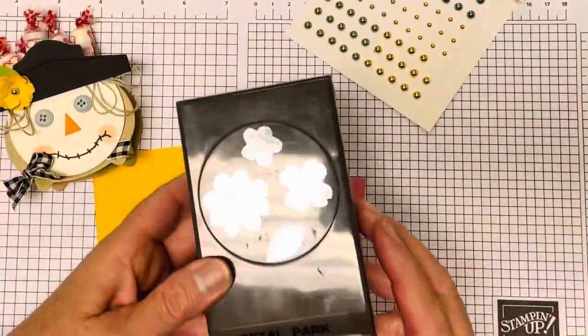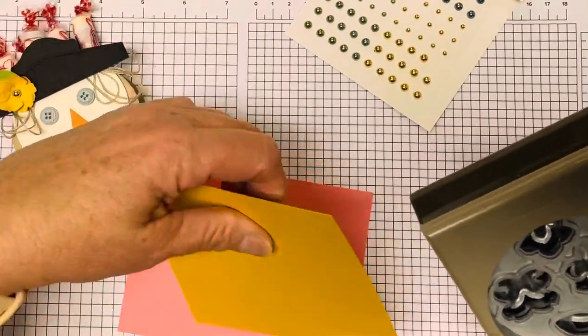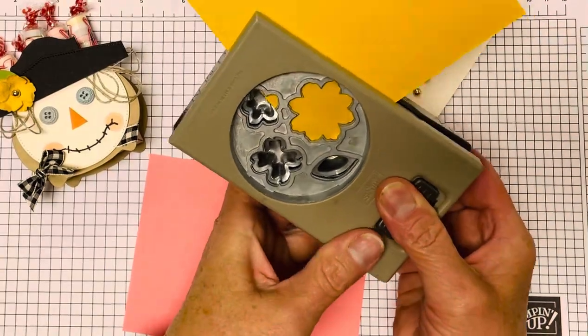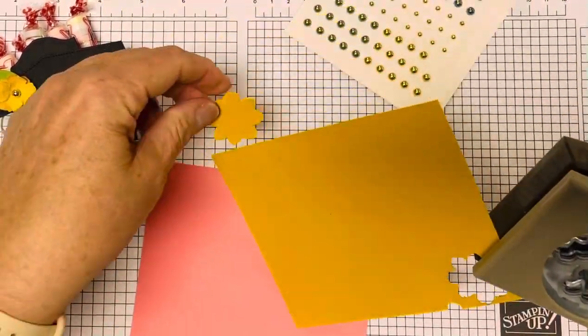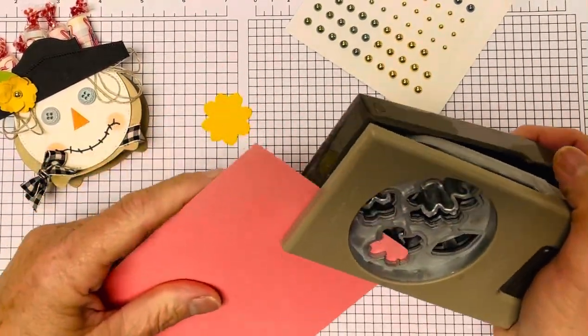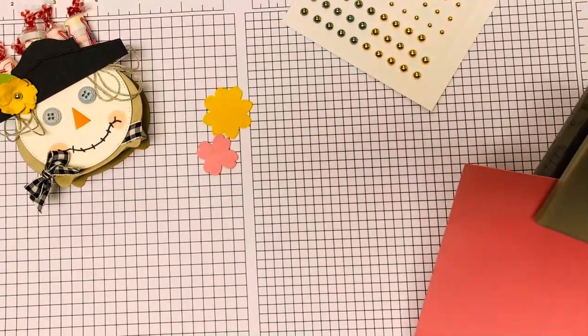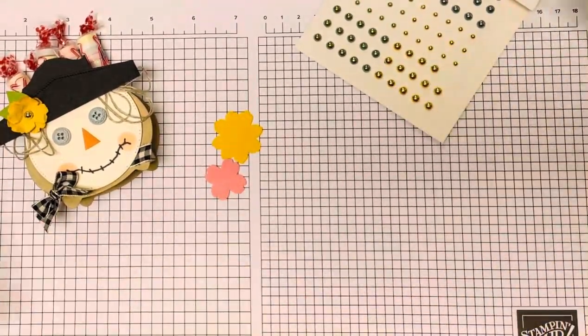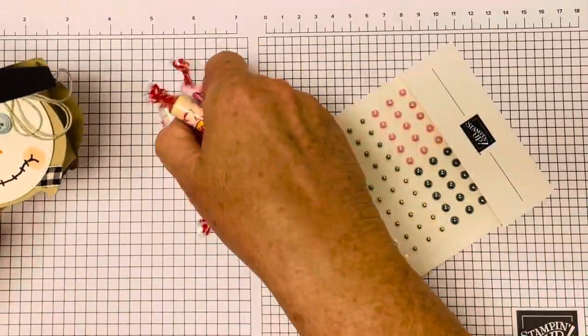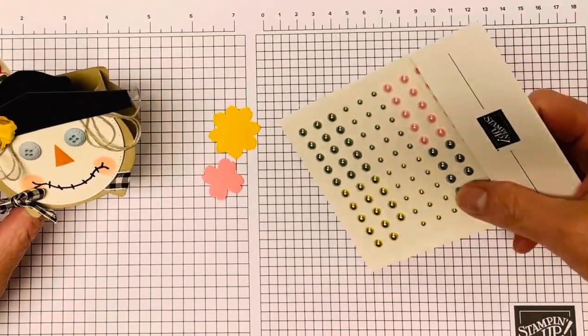I have my Petal Park punch and I'm going to punch a flower out of Crushed Curry. This is Crushed Curry. And I thought I would do one out of Flirty Flamingo so you could just see them in different colors. And I did want to share for the center of this flower. Oh, there go my Smarties.